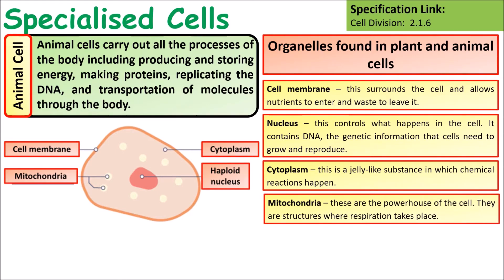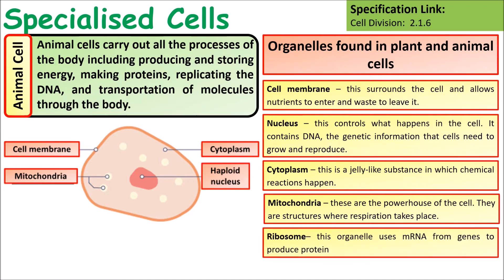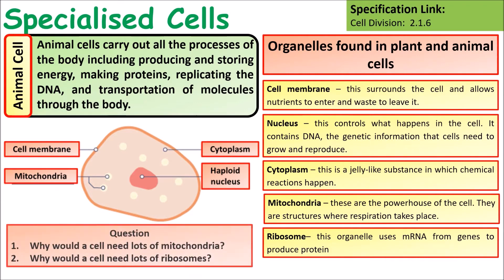The mitochondria is where respiration takes place within the cell. Ribosomes convert instructions in the form of messenger RNA, produced using genes, into proteins. Think about what sort of cells would need lots of mitochondria, and what sort of cells would need lots of ribosomes.